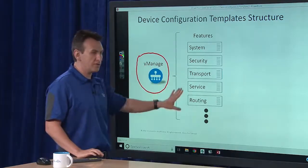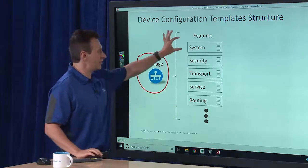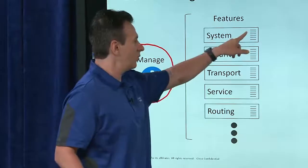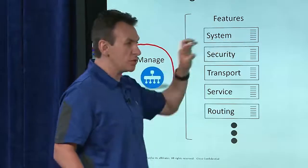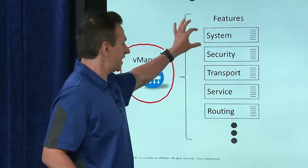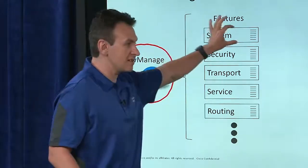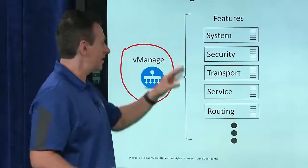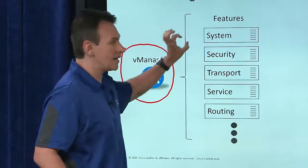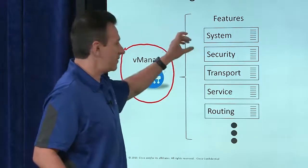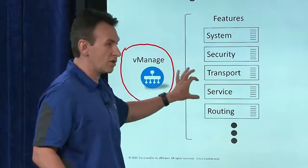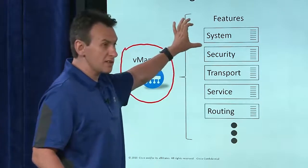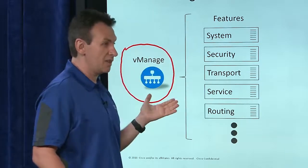Inside those individual features, think of those as buckets. Inside each one of them we have individual settings. When we say something is a system feature, it's actually a collection of individual settings that go inside the system. The same thing happens for security, transport, and service. Some of those have a lot of settings, some have a few, depending on how the block is structured.